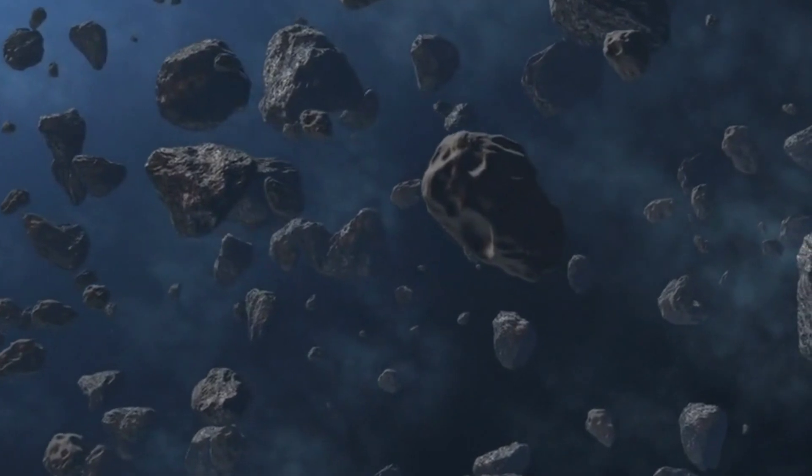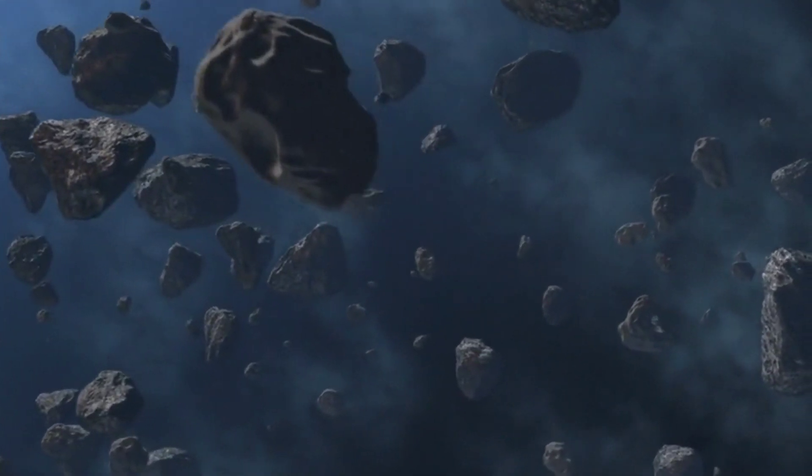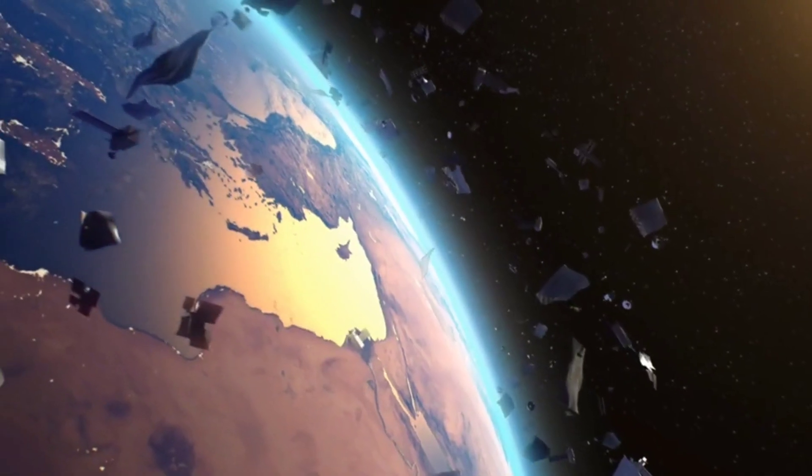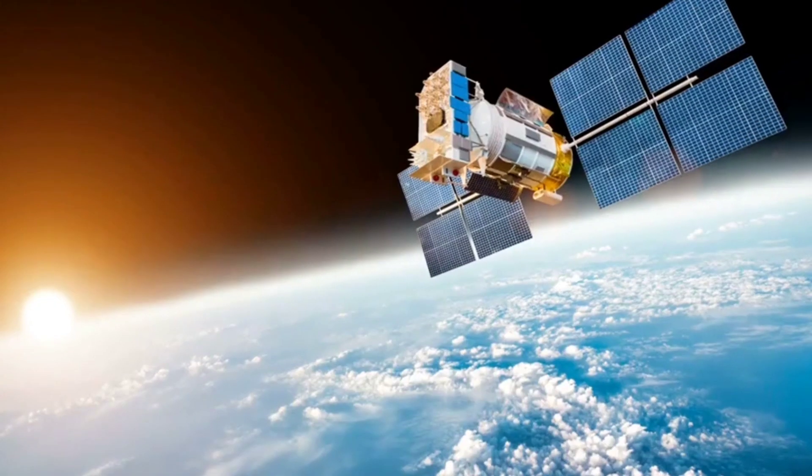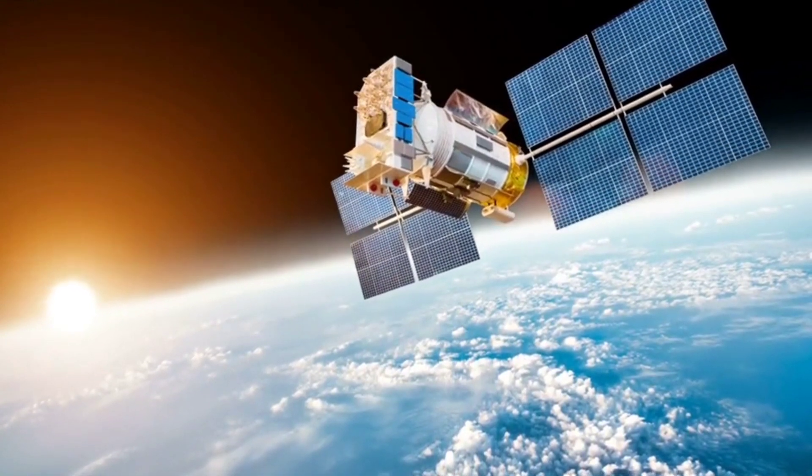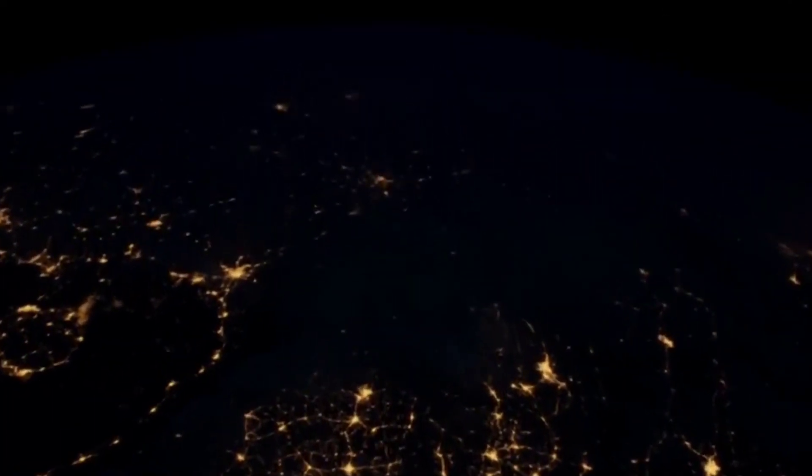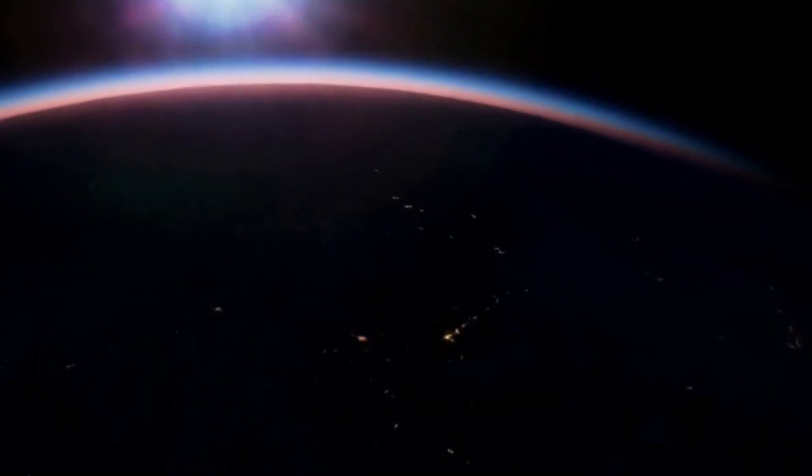The colossal energy released during this cataclysmic event resulted in the ejection of massive amounts of debris into space. Over time, this debris coalesced and formed what we now know as the moon. Initially, the moon was in a much closer orbit to earth than it is today. This closeness had a significant impact on our planet and influenced various aspects of our natural world.